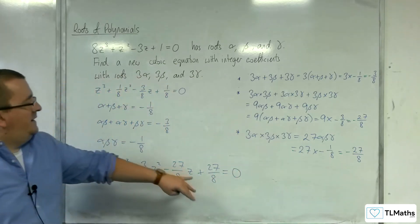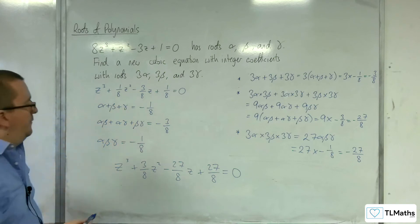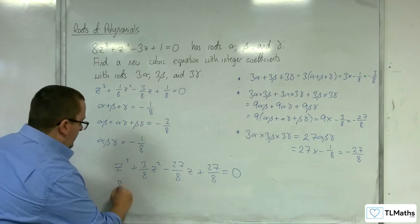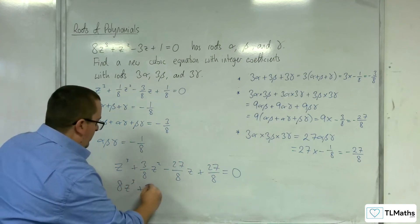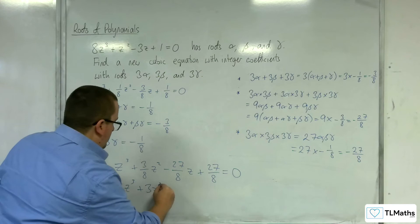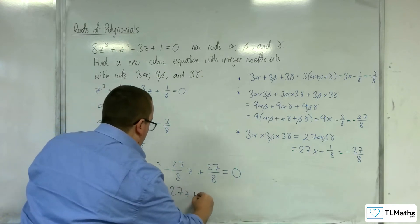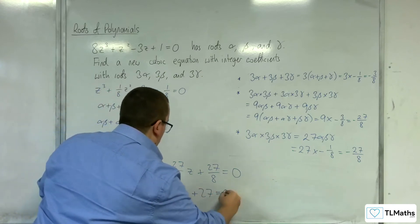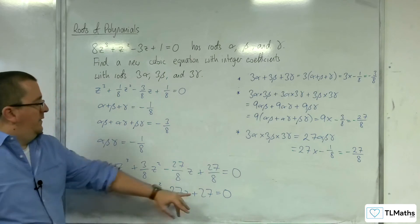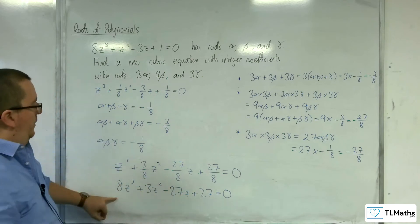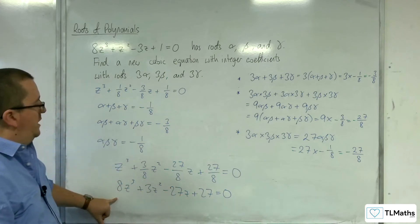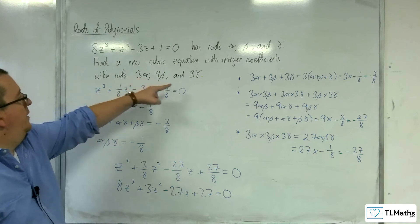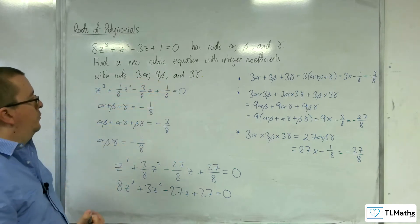We need this to have integer coefficients, so we multiply everything through by 8. That gives 8z cubed plus 3z squared take away 27z plus 27 equals 0. This is the cubic equation with integer coefficients that has those three roots.